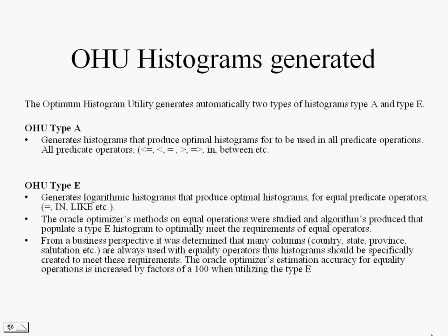The Optimum Histogram Utility generates automatically two types of histograms: Type A and Type B. OSU Type A generates optimal histograms to be used in all predicate operations. OSU Type B generates logarithmic histograms that produce optimal histograms for equal predicate operators.